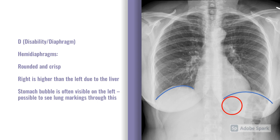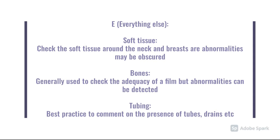Finally, in E — everything else — you're looking at soft tissues around the neck, the breasts and the nipples, which may be misinterpreted for lung pathology. Look at the bones; you might see abnormalities in the humerus and the clavicles — make sure to comment on those. And as best practice, mention the presence of tubes, drains, oxygen masks, etc.